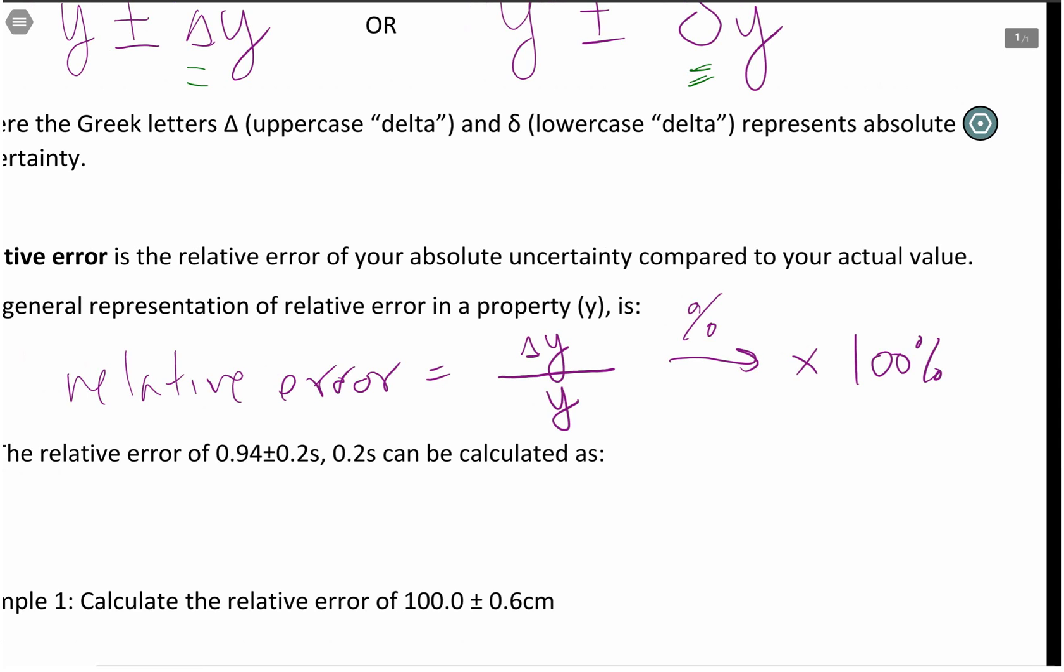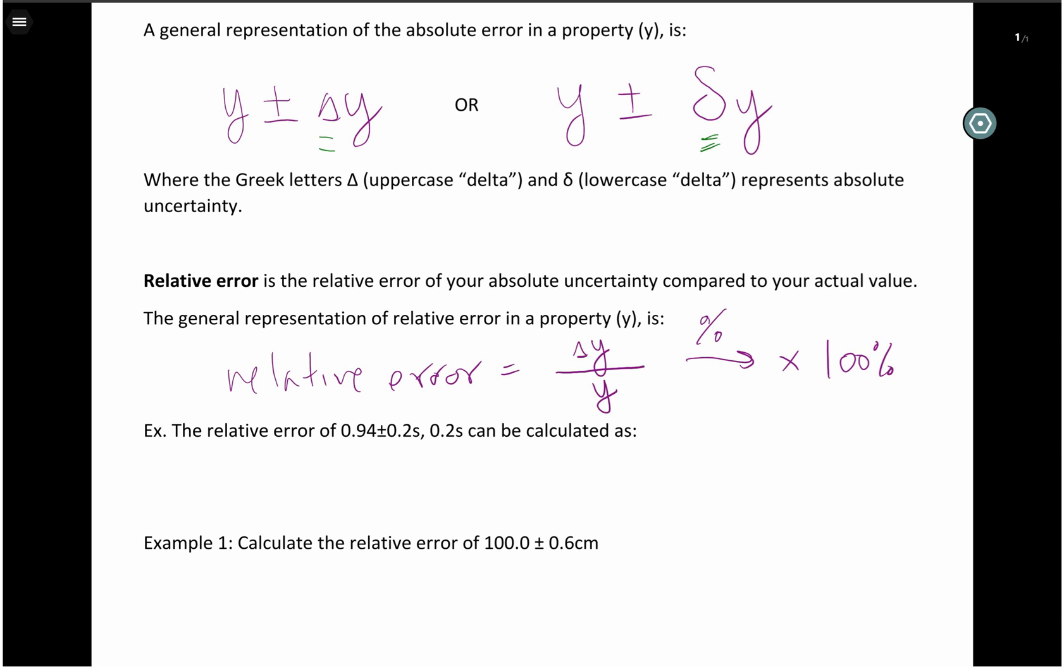But most of the times when you're doing calculations in error propagation, you're not going to need to write this middle step. You're not going to need to write this thing as a percentage. Rather, most of the times you will be writing it and using this form instead.